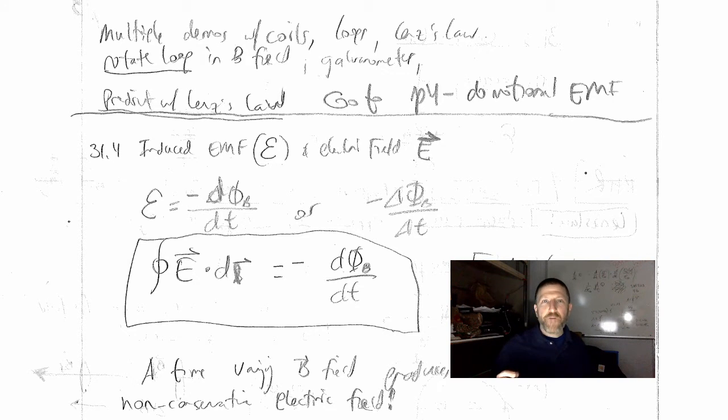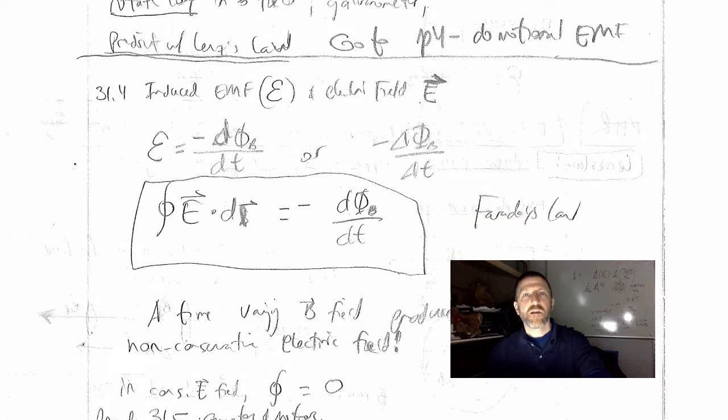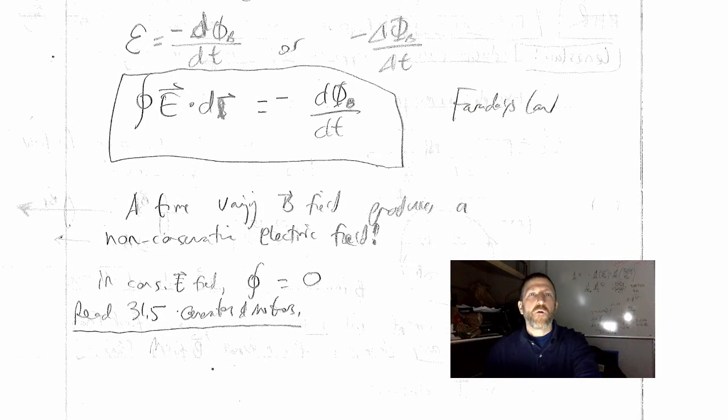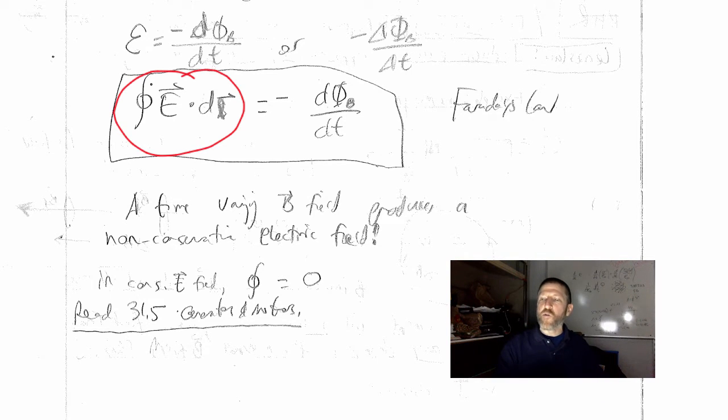Now this is Faraday's law, written for you guys like this. What the heck is this right over here, what's that? Integral around a closed loop of E dot DL. What is that? That is not Gauss's law.